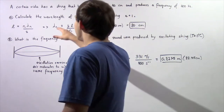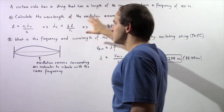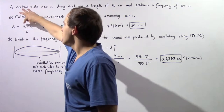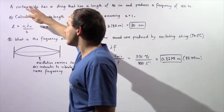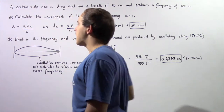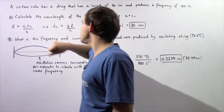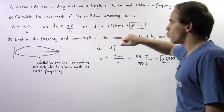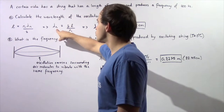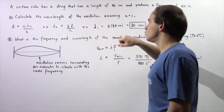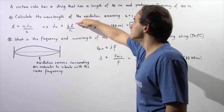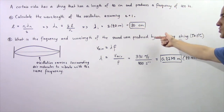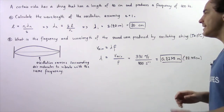Let's begin with Part A. To calculate the wavelength of the oscillation, we use the equation that relates the harmonic number, the wavelength at that harmonic, and the length of the string. Rearranging and solving for the wavelength at the nth harmonic, with n equal to 1, the wavelength equals 2 multiplied by the length of the string: 2 times 40 centimeters gives us 80 centimeters.